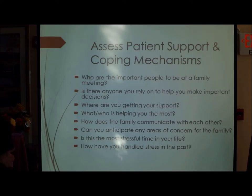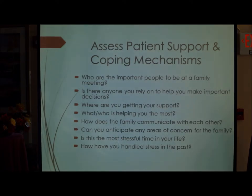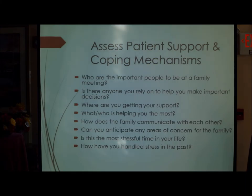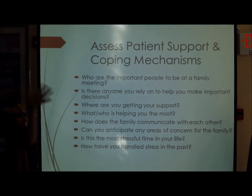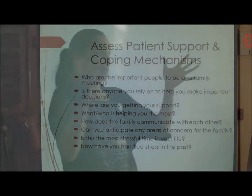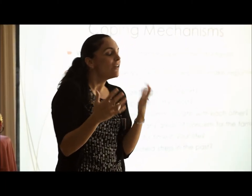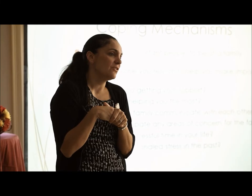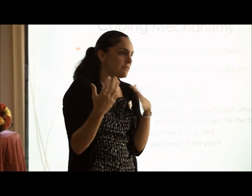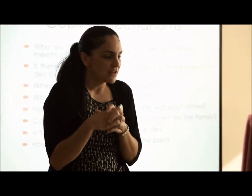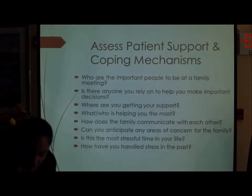Assessing coping mechanisms is important. Where are families getting their support? Do they have family support or estrangements with very limited social supports? How do families communicate? Every family is different — some get very excitable. It's important to recognize all of those factors at play when talking with patients and family, especially when something acute is happening, anxieties are high, and tension is elevated.